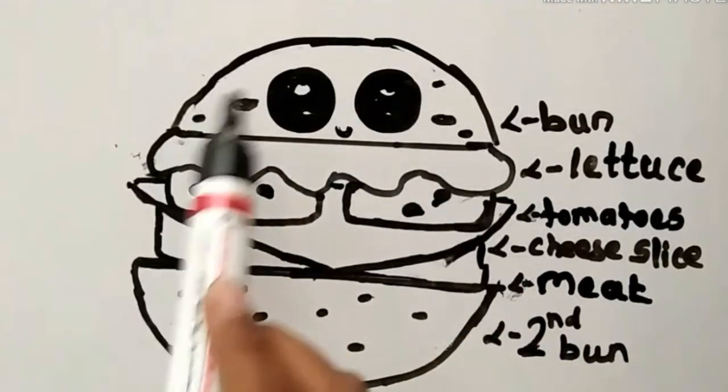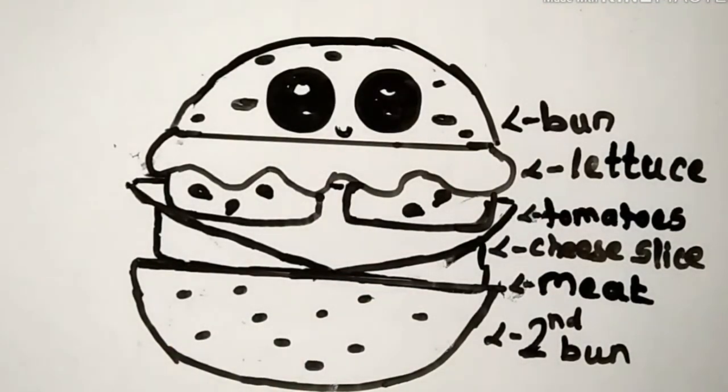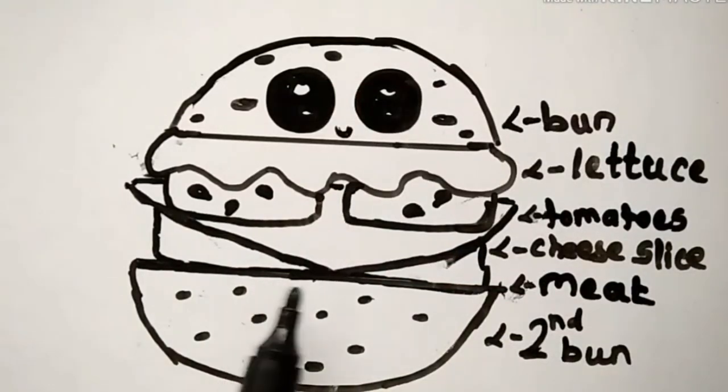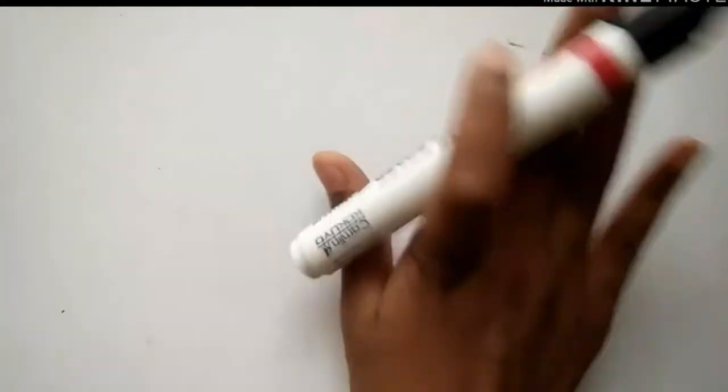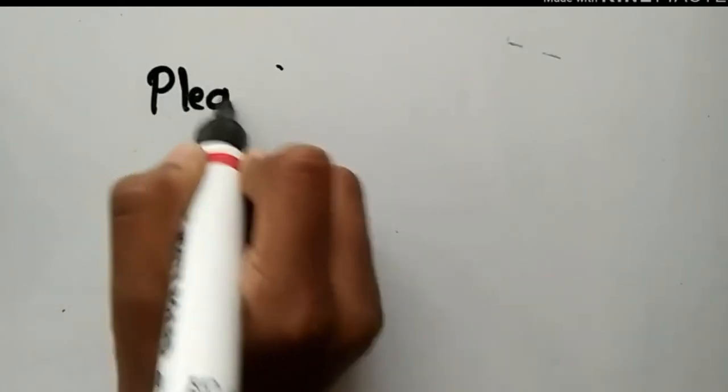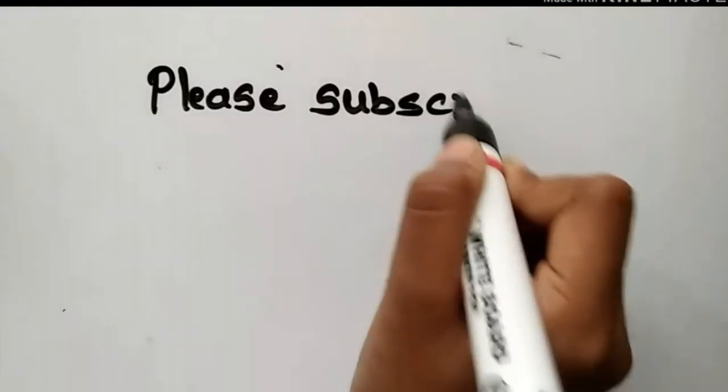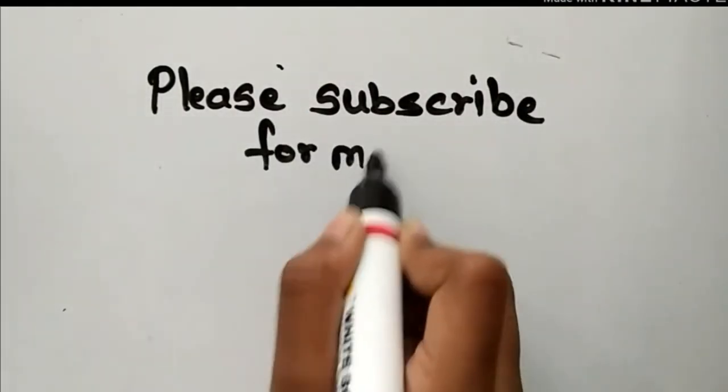Okay, now the eyes are fully done and just a small smile like this. Wow, and we are done with the burger. We just have to draw seeds in the last. So we are done.